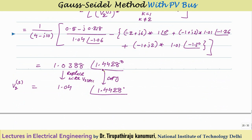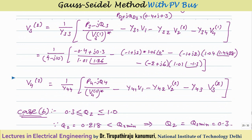The result of the second iteration gives V2(2) = 1.0388∠1.4428°. Remember: once this is obtained, the magnitude is again replaced by the specified value 1.04, but the angle 1.4428° from this iteration is kept. So V2(2) is taken as 1.04∠1.4428° for subsequent calculations. Now let us consider Case 2.